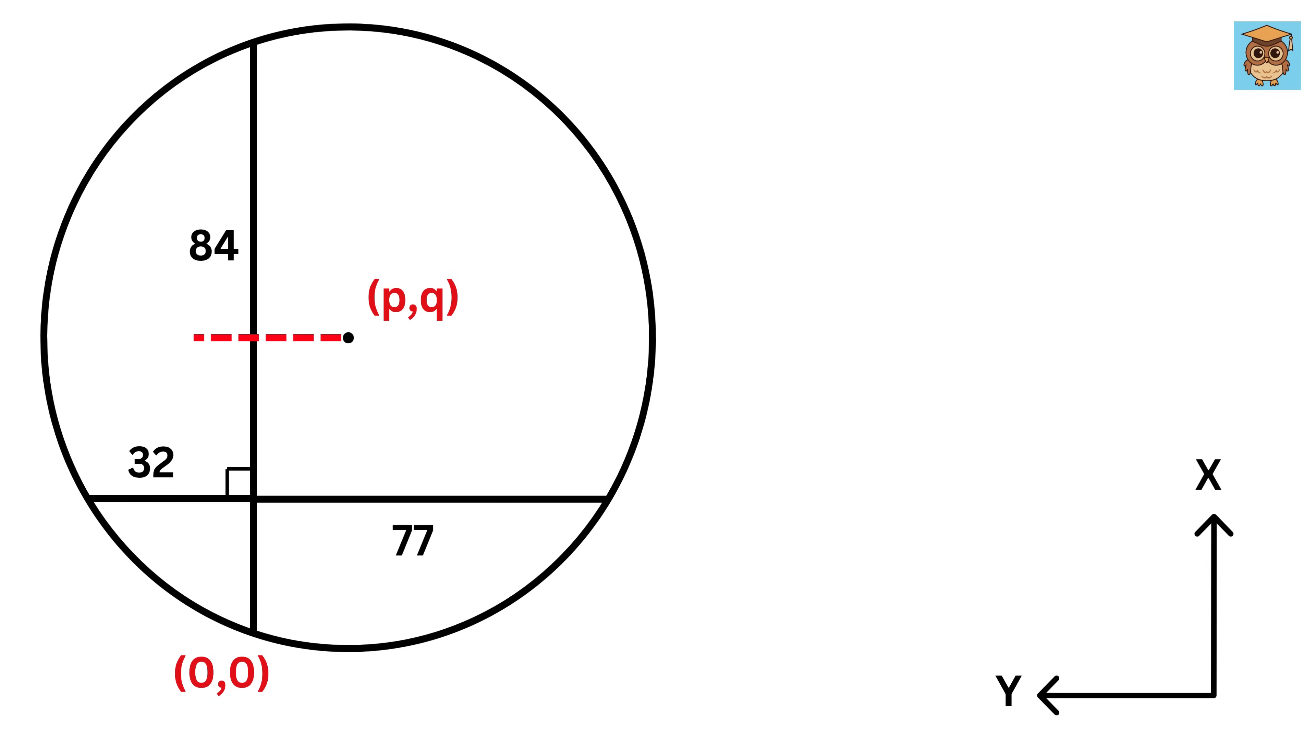Now let us draw this perpendicular bisector line from the center of this circle to this chord. It will bisect the chord like this, and this length will be equal to 84 over 2, or 42 units.